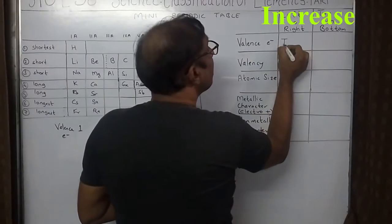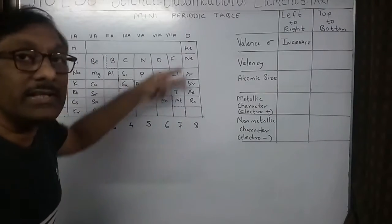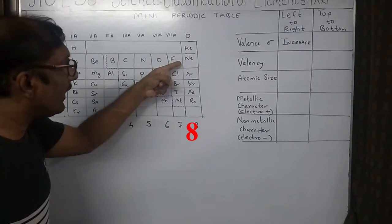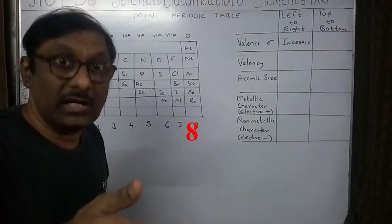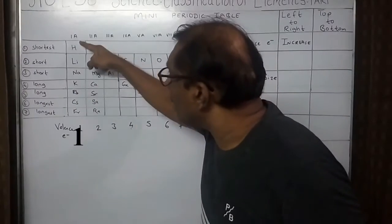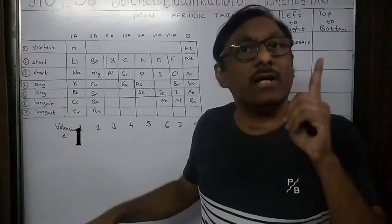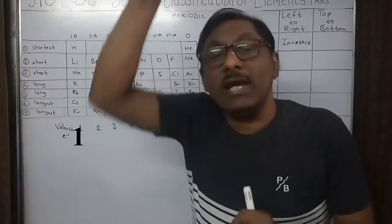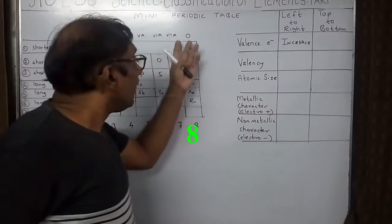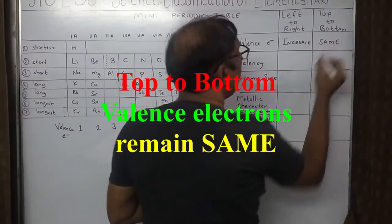What about going from top to bottom? In the inert gas group, all electrons in the outermost shell will be eight, except helium which has two — neon, argon, krypton, xenon, and radon all have eight electrons in their outermost shells. In group 1, lithium, sodium, potassium, rubidium, cesium, francium all contain only one electron in the outermost orbit. The number of valence electrons does not change as we go from top to bottom — they remain the same.